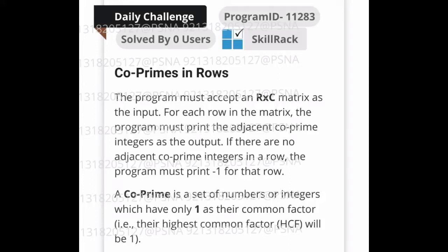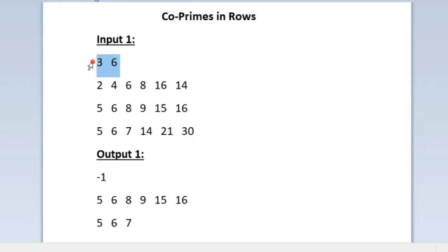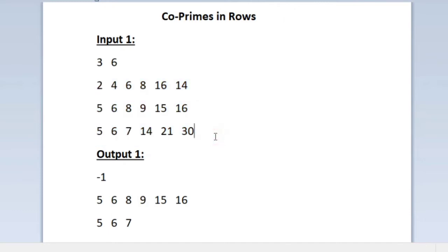This is the question asked in today's SkillRack daily challenge. In the first line of our input we are given the values of r and c, and after that we are given an r cross c integer matrix as input. Our task is to find the co-prime integers in every row of the matrix.